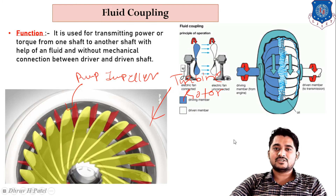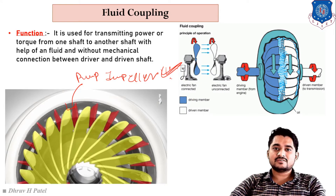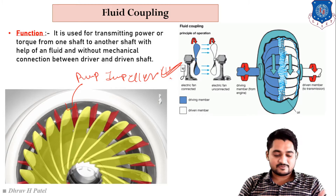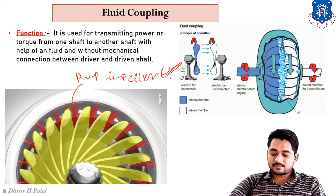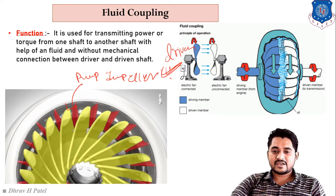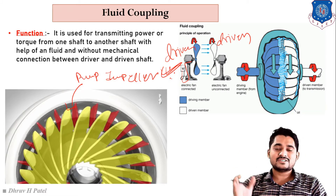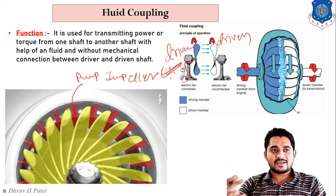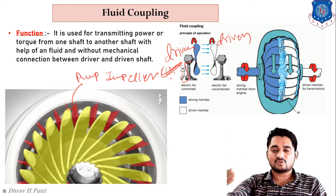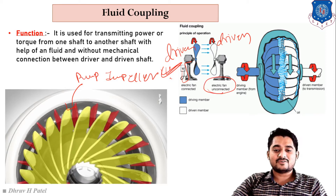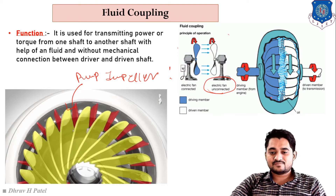Let's understand the working of fluid coupling using a simple example. Suppose we have two fans mounted parallel and in front of each other — one is the driver fan and the other is the driven fan. When we supply electricity to the driver fan, it rotates at some RPM, and the air it generates causes the second fan to rotate as well, but at a speed slightly less than the driver fan. That is the basic principle of fluid coupling.